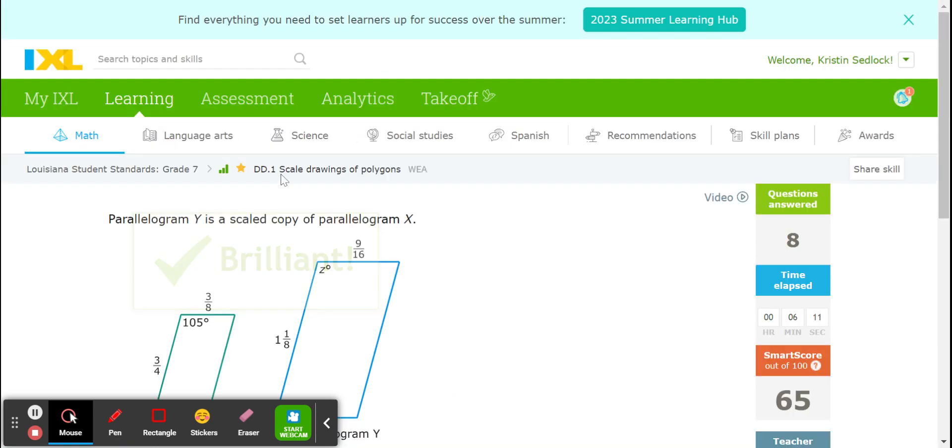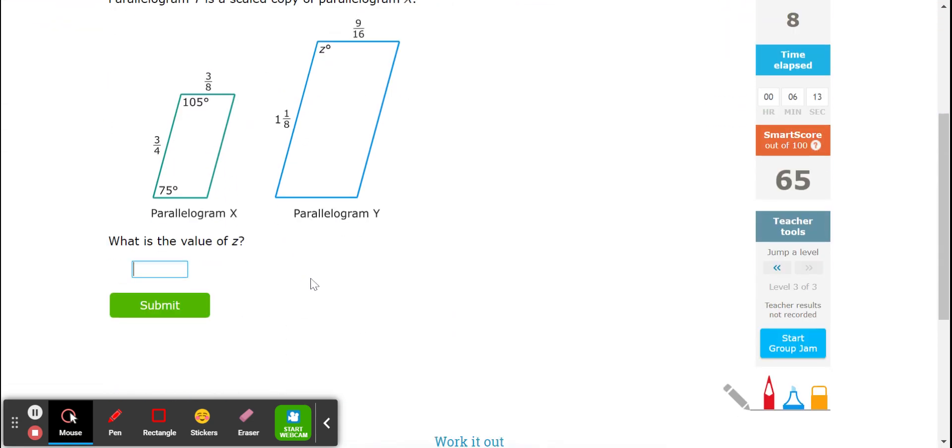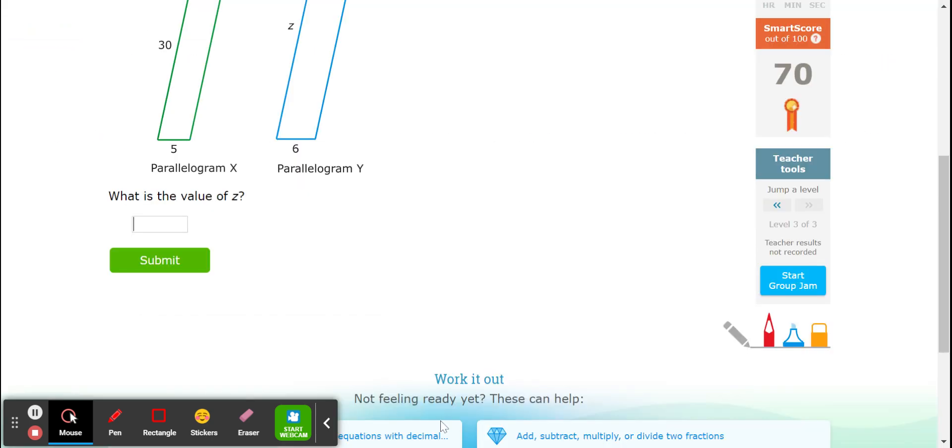I'm taking you through some of these harder ones. It's the same exact step. It's just more work. What is the value of Z? Easy peasy. Z is also 105. The angle measures do not change in scale factor.